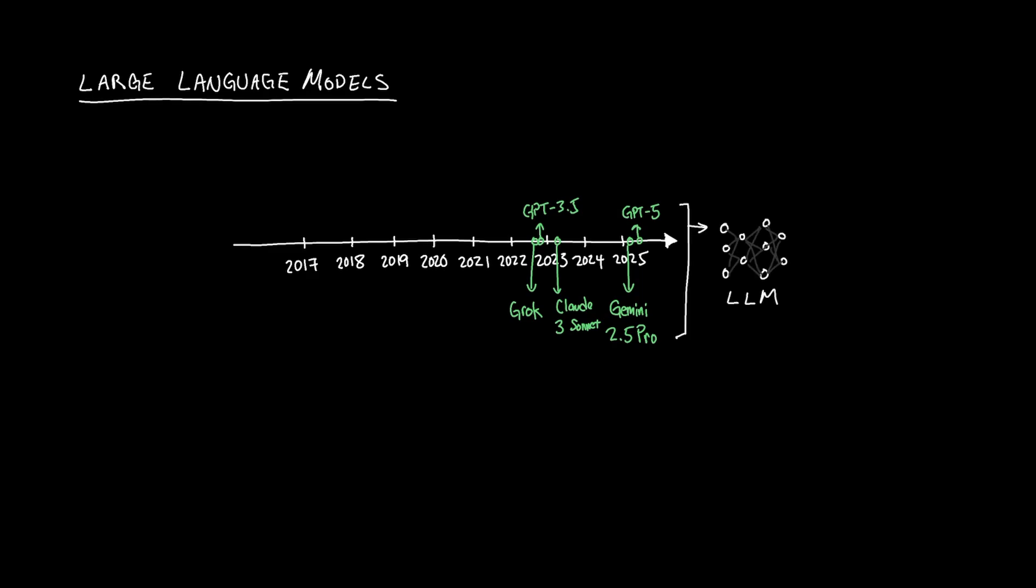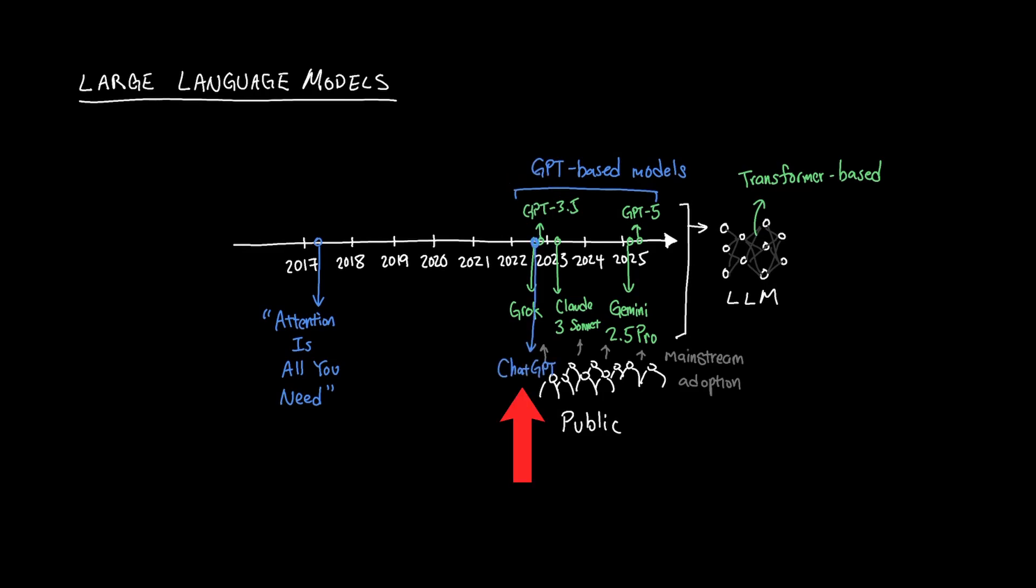Most large language models we use today, like Gemini, Cloud, and GPT-5, are transformer-based models. Even though the transformer model was announced back in 2017, GPT-based models didn't really gain mainstream adoption until around 2022 with the release of ChatGPT. So as you can see, we had nearly 5 years of scaling and experimenting until the GPT architecture rose to where it is today.